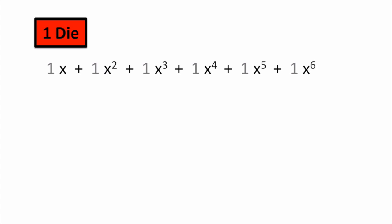We can write it like this. This means that if we roll the die, there is one way to get a 3, one way to get a 5, or any other number from 1 to 6.